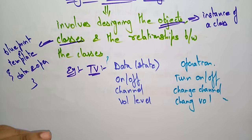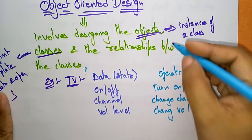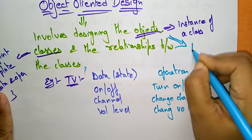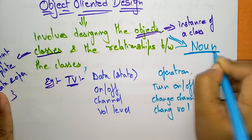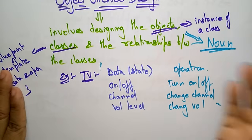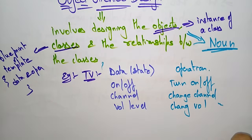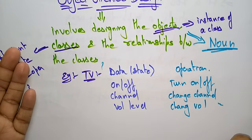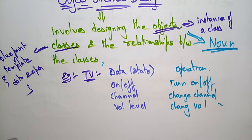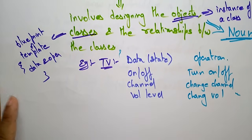The object is called an instance of a class. An object is represented as a noun — a name, a place, a thing — whatever it may be, that is called an object. For those objects, we perform some operations by using the class template.